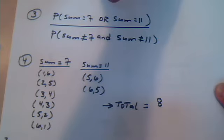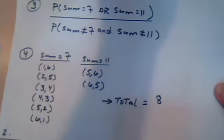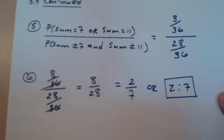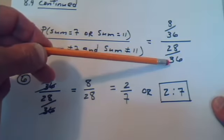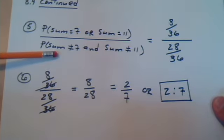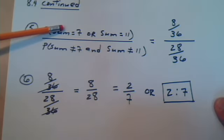So, that would be 36 minus 8, all the other ones. So, that would be 28 out of the 36 do not fit the top description.